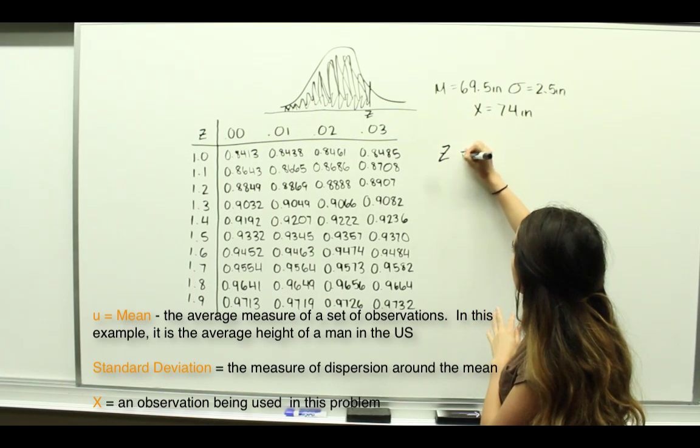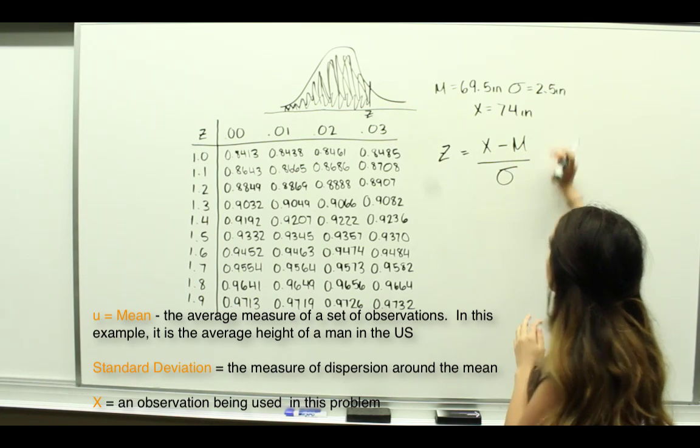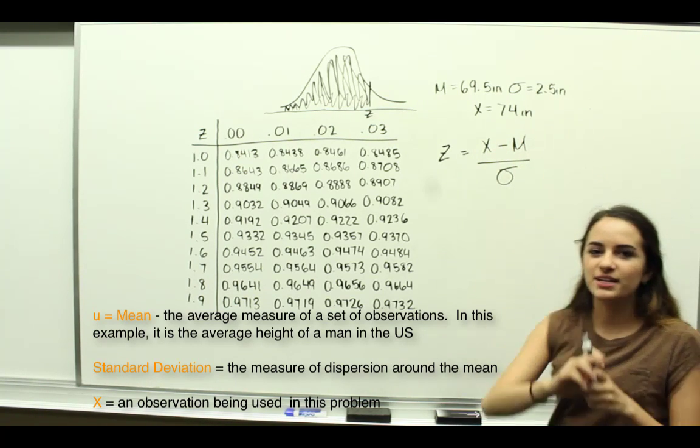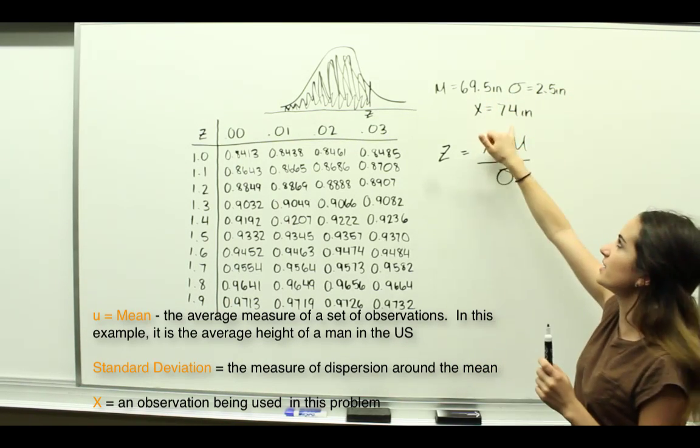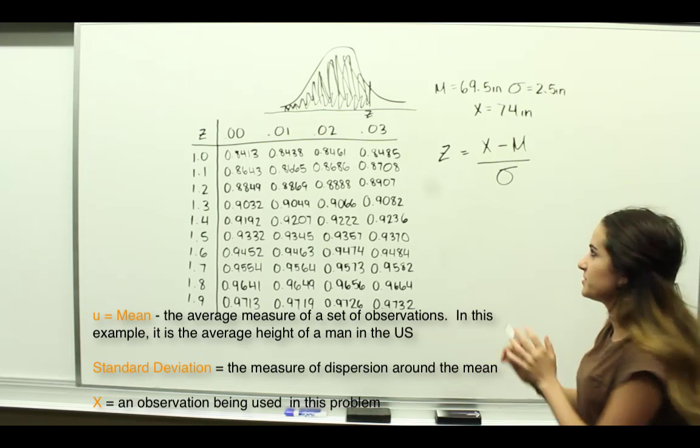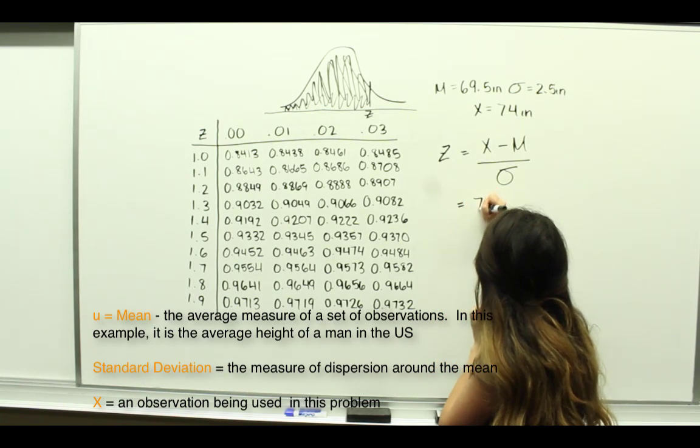We'll use the equation Z equals X minus mean over standard deviation. In this case we were given the mean and standard deviation and the observation to find the Z-score for. So we'll just plug it in.